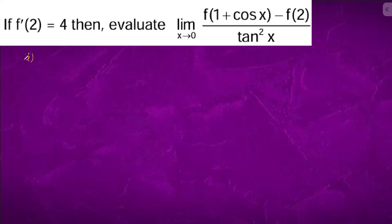Limit x tending to 0. The denominator is 0, so this is 0 by 0.